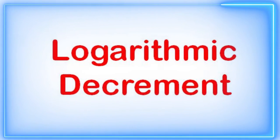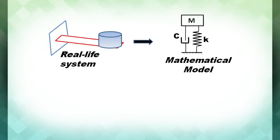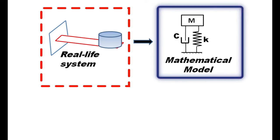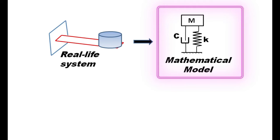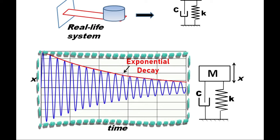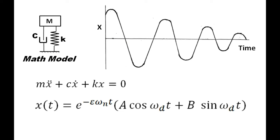Before we start, a quick review of logarithmic decrement. A real-life system can be represented as a simple single degree of freedom system. Here I am representing a cantilever beam with a tip mass as a mass connected with a damper and a spring. If I allow the system to vibrate freely, this will be a typical plot where the amplitude is decaying with respect to time because damping is present, and the decay follows an exponential curve.